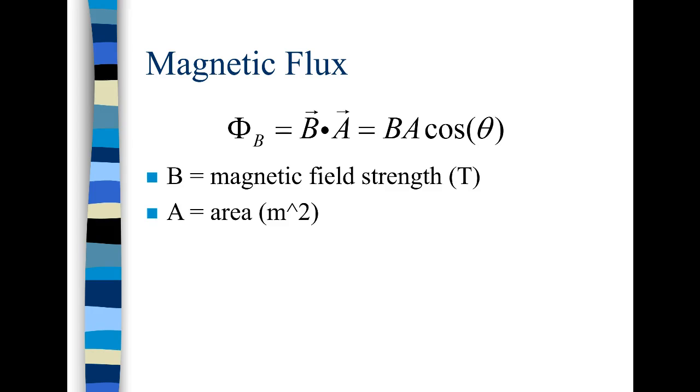A is the area in square meters and phi_B is the magnetic flux in Webers. Shorthand for a Weber is WB. So that's Tesla times meters squared.